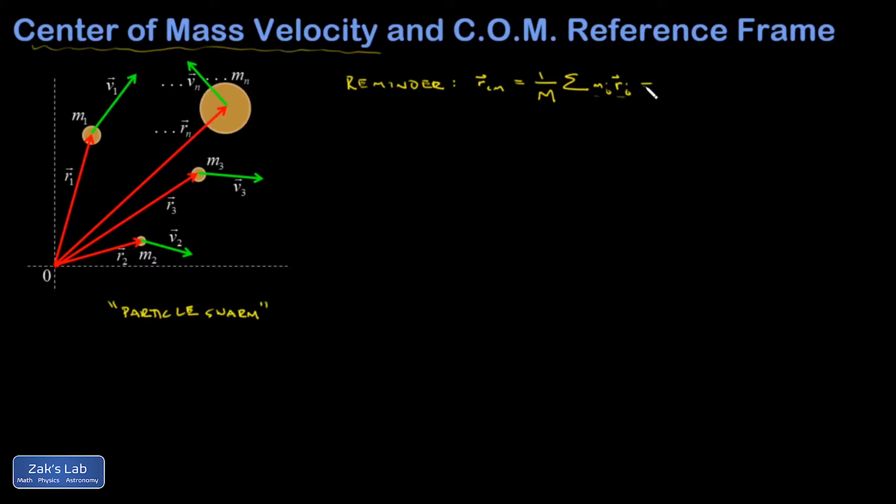Now, it's commonly useful to turn this thing around and write it this way. The total mass times the center of mass position is given by the sum of all the masses multiplied by their individual positions. This just happens a lot when you're dabbling in the theorems of mechanics. So this thing is going to be useful later.